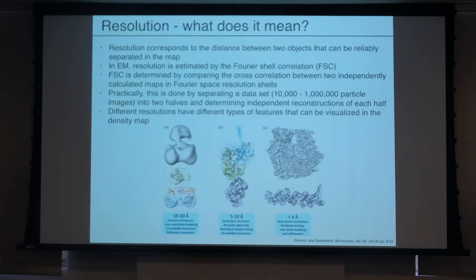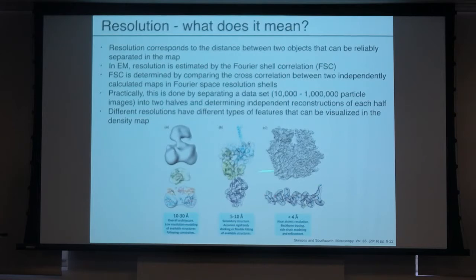At better than 4 angstroms you can make much more sophisticated hypotheses and test them in a more direct fashion. But in the end you're using the same sort of information: you have a model that you built, and you want to test it to understand the particular biological question you're interested in addressing.